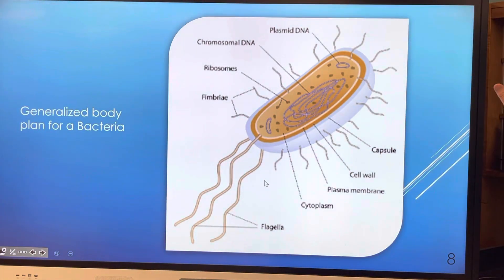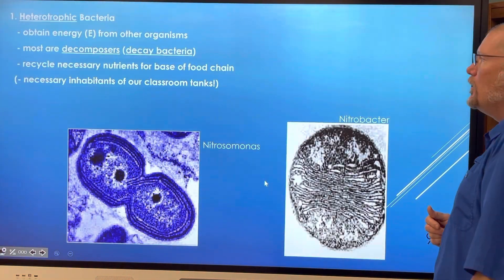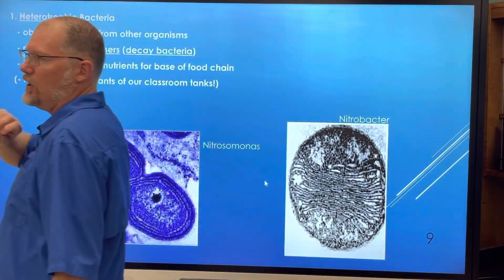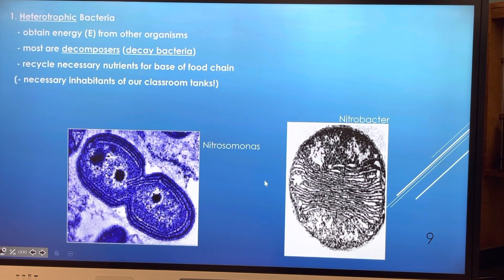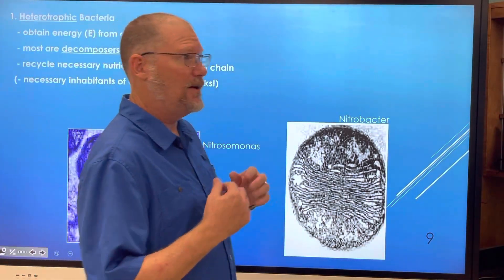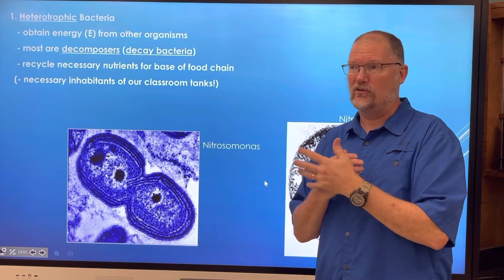Here's the generalized body plan for bacteria — we're going to be working on something like this tomorrow. So there are different kinds of bacteria. We have heterotrophic bacteria — heterotrophs obtain energy from other organisms. Most of them are decomposers or decay bacteria that recycle nutrients for the base of the food chain. If there were no bacteria, the ecosystem would probably be dead — there would be nothing alive at all.